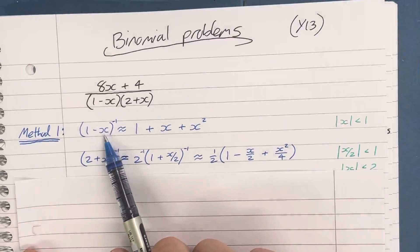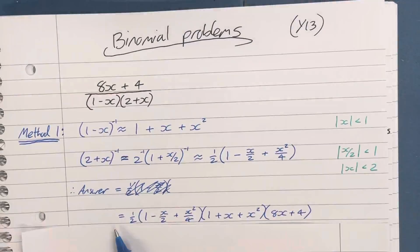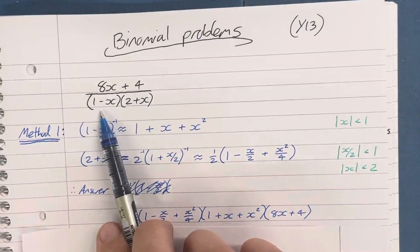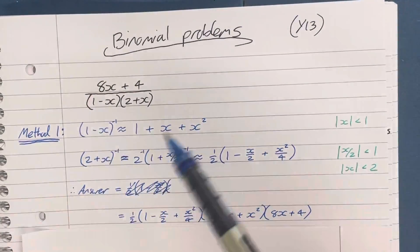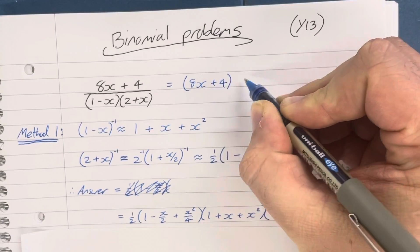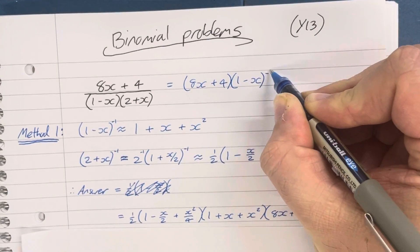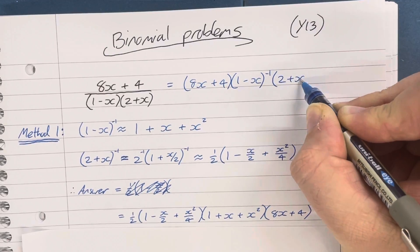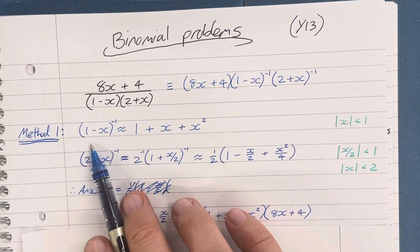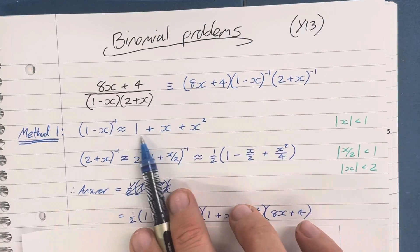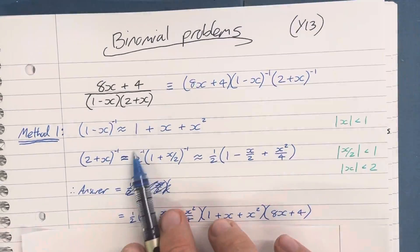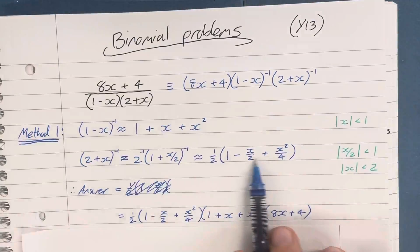Method one was to first consider that the expression is actually just a product of three things: (8x + 4), (1 - x)^(-1), and (2 + x)^(-1). I use the binomial expansion on the first part to give the first three terms, and then apply a binomial expansion on the second part, taking out the 2 to ensure there is a 1, giving those terms.